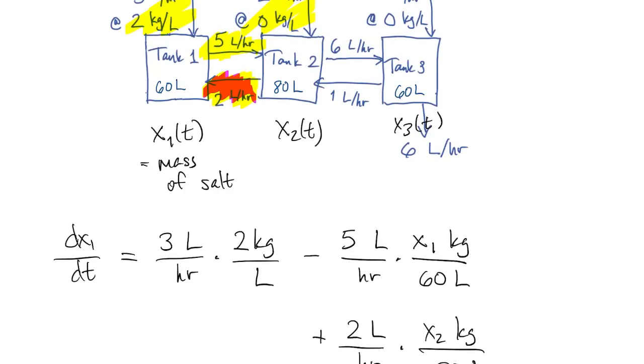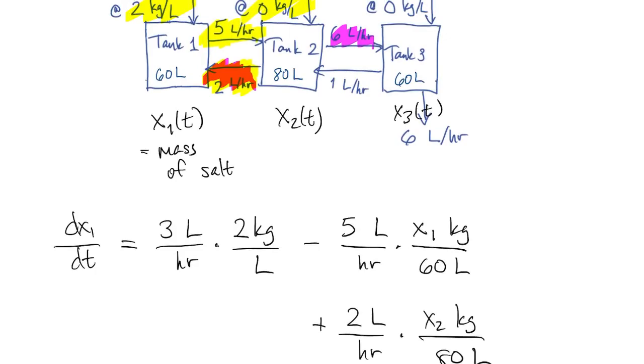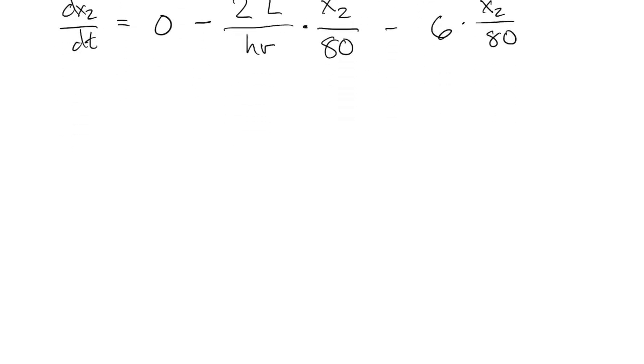Next, we consider what tank two is pumping into tank three. So that's a loss of six times the concentration in tank two. And then we consider inputs. So we have the input from tank three. So that's an increase of one liter per hour times the concentration from that tank.